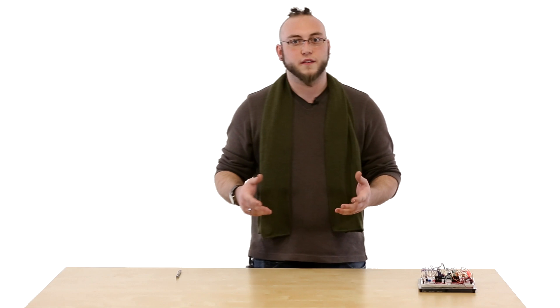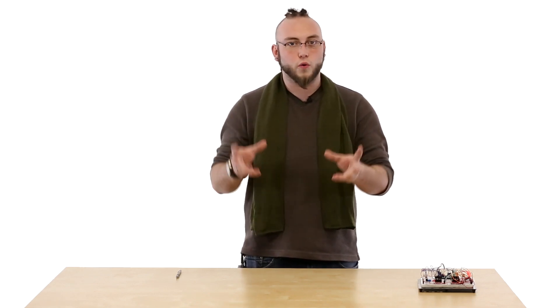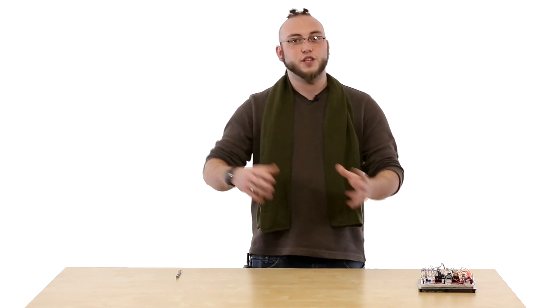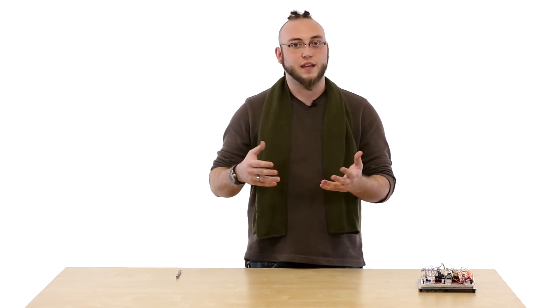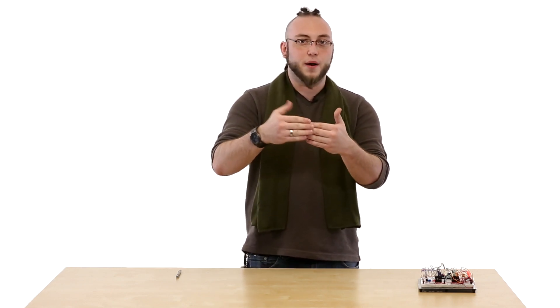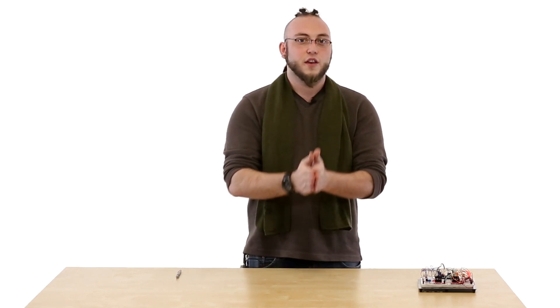So the way that a shift register works is it actually just holds a register of bits in memory. And the reason it's called a shift register is because you shift those bits in one at a time, meaning every time that you shift one bit in, which is either a one or a zero, it bumps the bit that was there into the next bit in the register. So you actually shift them in one at a time.